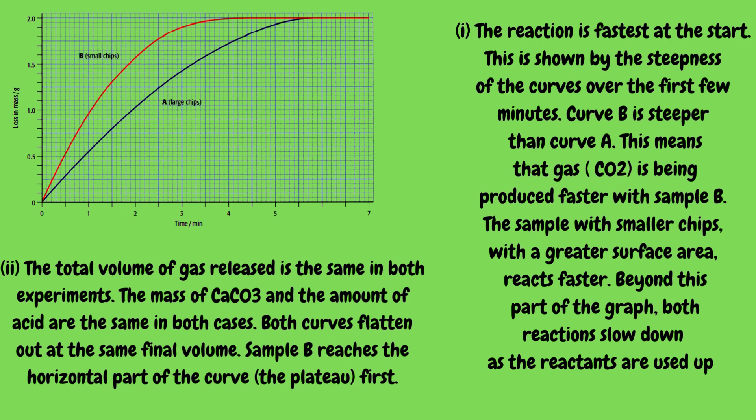The total volume of gas released is the same in both experiments, since the mass of calcium carbonate and the amount of acid are the same in both cases. Both curves flatten out at the same final volume, but sample B reaches the horizontal part of the curve first.